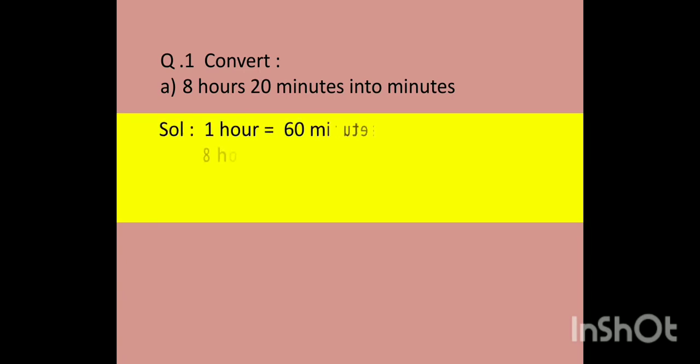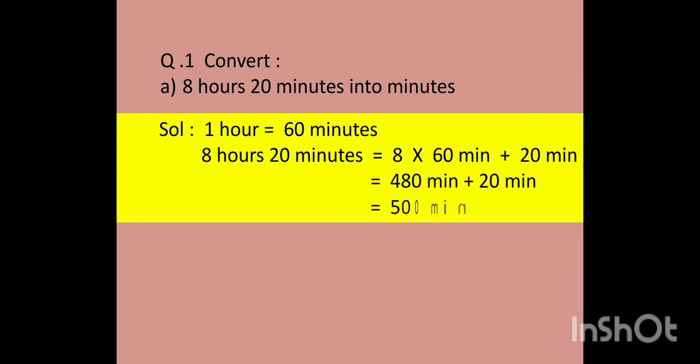Our first question is, convert 8 hours 20 minutes into minutes. Children, as we know, relation between hours and minutes is 1 hour is equal to 60 minutes. So 8 hours 20 minutes is equal to 8 multiplied by 60 plus 20 minutes. 8 multiplied by 60 is 480 minutes plus 20 minutes. And our answer is 500 minutes.